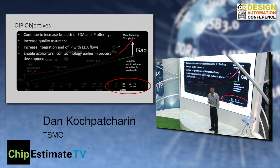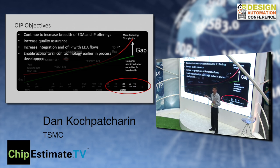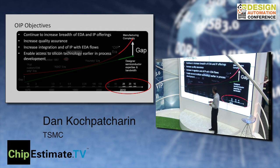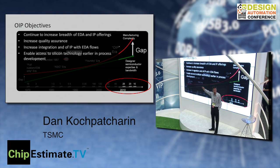What are some of the objectives of OIP? First, to increase the breadth of EDA tools. Second, quality assurance — mask costs are getting more and more expensive. If you tape out at 16 nanometer, your mask cost is $10 million or more. Imagine one broken design flow causing a tape-out failure, or an IP that's not working — that can be quite expensive. And third, getting early access to develop IP and tools, because the complexity demands earlier starts.